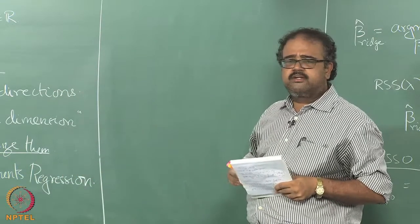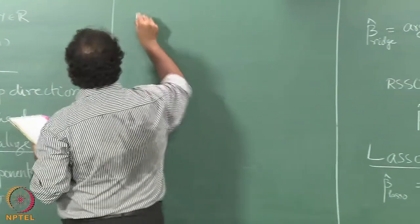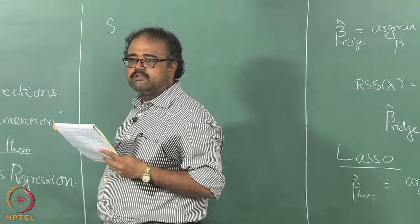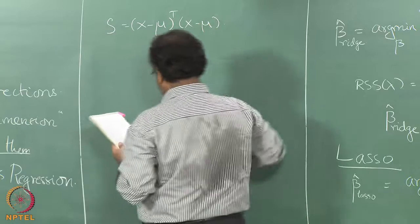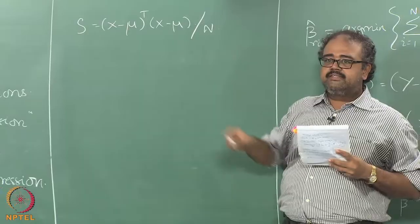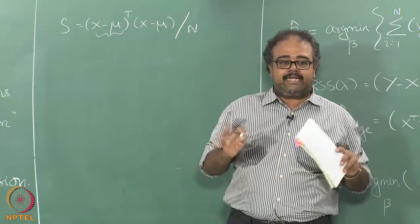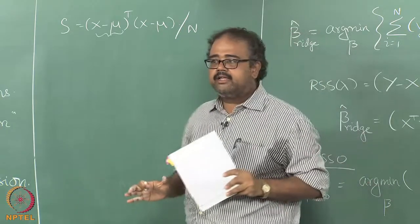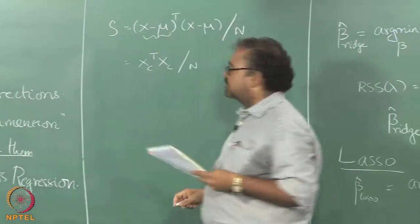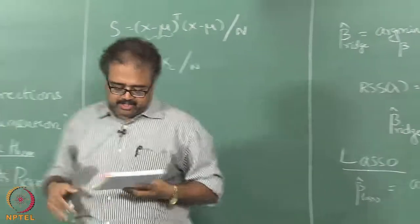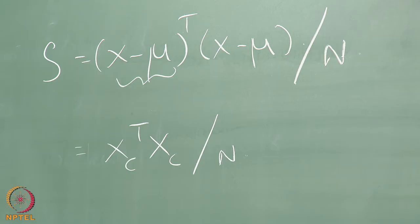If you look at singular value decomposition or what is called the principal component analysis literature, you will find that they talk about the covariance matrix S. The covariance matrix — if you think of the centered data — then X transpose X becomes this. You find the eigen decomposition of the covariance matrix.